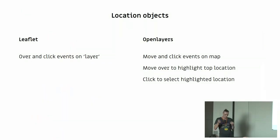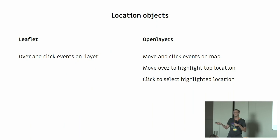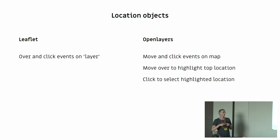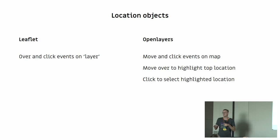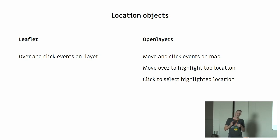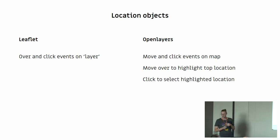Same for the locations. The Leaflet layer as a location has its own events — hover over a location, select a location. With OpenLayers it's a lot nicer: I move the mouse over the map and it finds locations on all layers and highlights them. If I click select, it selects the highlighted location.